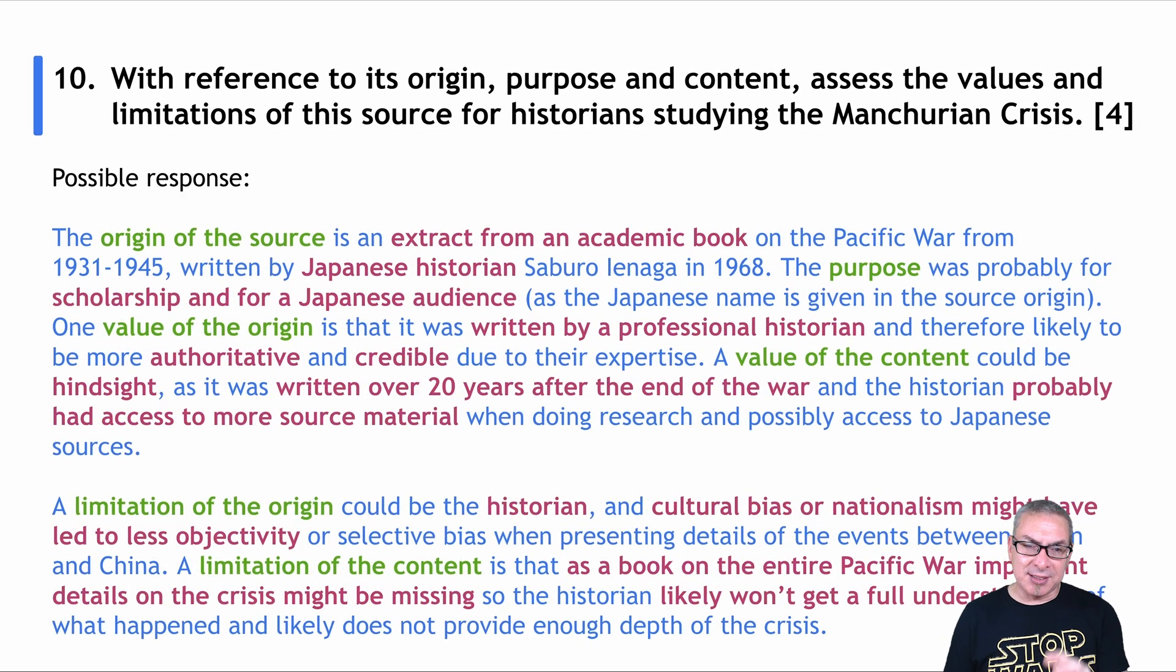Okay. So note here I've broken this into two parts. The first part, it's got the origin, purpose, and values. And the second has limitations. I've done that just to be very clear to the examiner. Now in the green, note that I've got the origin of the source, the purpose, a value of the origin, a value of the content, a limitation of the origin, a limitation of the content. I'm signposting. I've let the examiner know what I'm talking about.